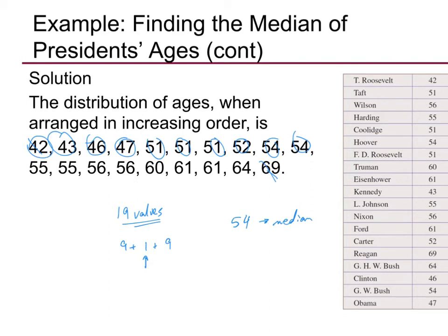The president who was 54 years old is Herbert Hoover, and George W. Bush is also 54 on the list. Obama was 7 years younger than those two presidents. So 54 is the median of this data set.